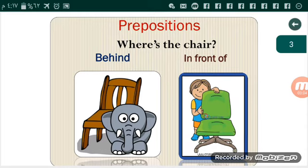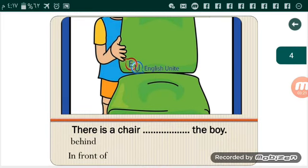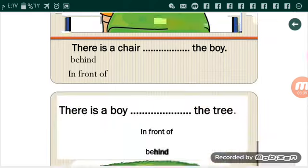Now, where is the chair? There is a chair behind the elephant. There is a chair in front of the boy. Your turn now: There is a chair, space, the boy. Behind or in front of? الكرسي فين دلوقتي? Excellent, in front of.